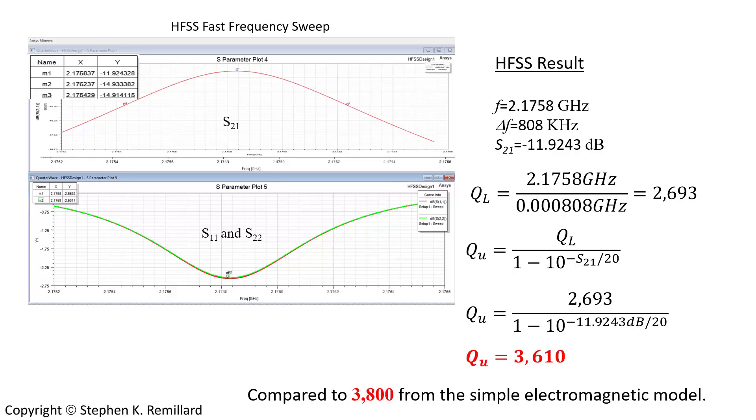So you can compare that 3610 to 3800, which we got from the simple electromagnetic model. When you bring that end wall in, you'll start to get additional dissipation on the housing wall, as you go from quarter wave to significantly foreshortened quarter wave, all the way to reentrant. So that difference in Q that you get as you bring in the wall is only going to grow, and we'll get farther and farther from ideality.